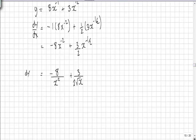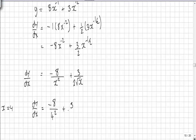So we're now looking for dy by dx when x equals 4. Substituting in x equals 4 we get minus 8 over 4 squared plus 3 over 2 root 4.